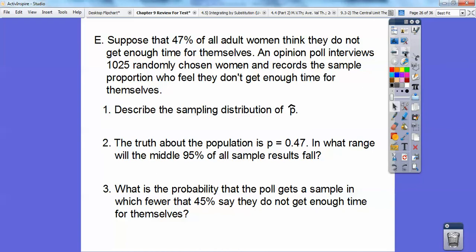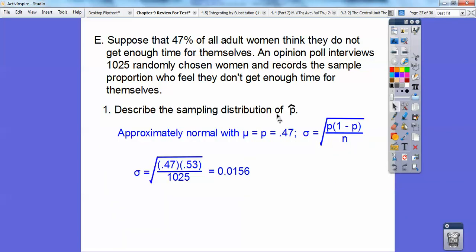Let's try another one. So suppose that 47% of all adult women think that they do not get enough time for themselves. An opinion poll interviews 1,025 randomly chosen women and records the sampling proportion who feel that they don't get enough time for themselves. So describe the sampling distribution of p-hat. We're going to say it's approximately normal with mean equal to p, which equals 47%, and then my standard deviation is I'm going to use my proportion standard deviation. So p times 1 minus p all over n. So those are my answers right there.